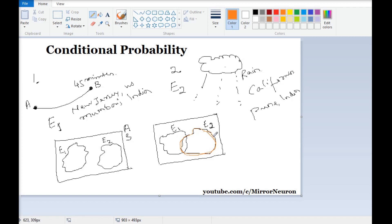What I am saying here is, given that E2 is already happening—it is already raining—what is my probability that I will reach from A to B within 45 minutes? That means I am interested to know about this portion here.